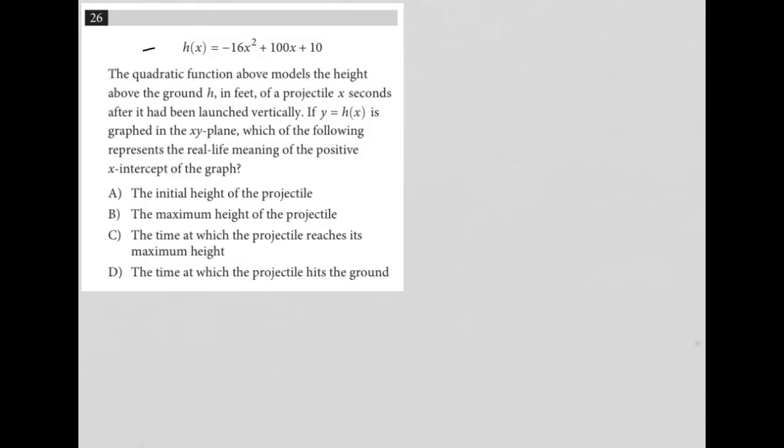So this question starts off by giving us a function h(x) = -16x² + 100x + 10. It goes on to tell us that the quadratic function above models the height above the ground h, in feet, of a projectile x seconds after it had been launched vertically. So we know that x is time and we know that h is height in feet.